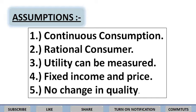Fifth assumption: quality of the commodity consumed also remains uniform — there should be no change in quality. इसके अलावा और भी assumptions हैं: marginal utility of money remains constant, consumer का taste and preference भी same होना चाहिए during the period of consumption, और only standard units of the commodity are consumed — like a cup of tea or glass of water, not a spoon of tea.